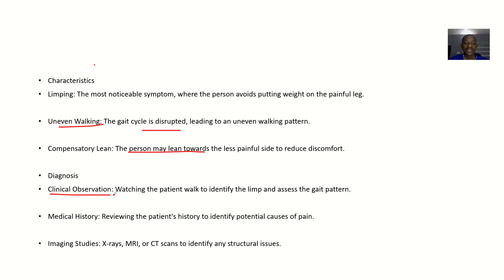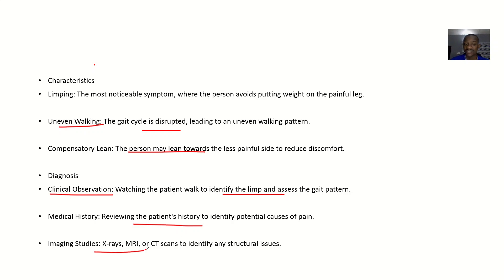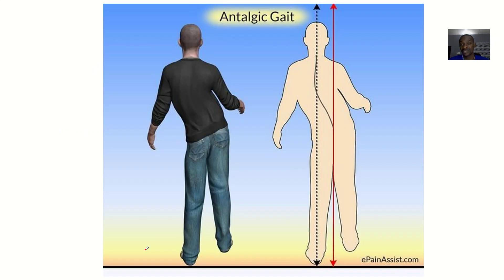Diagnosis: Clinical observation — when you watch the patient walk, it helps you to identify the limp and assess the gait pattern. Medical history — you review the patient's history to identify potential causes of the pain. Imaging studies — things like X-rays, MRI, and CT scan can all help to identify any structural issues the patient may have.